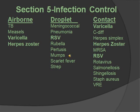Varicella is chickenpox, measles is rubeola, and herpes zoster is shingles. For the NCLEX, focus on airborne diseases using the TMV mnemonic. For droplet, if something is not airborne, it's probably droplet. For contact precautions, think about diseases spread by fecal incontinence, diarrhea, or direct touch — like rotavirus, MRSA, and C. diff.